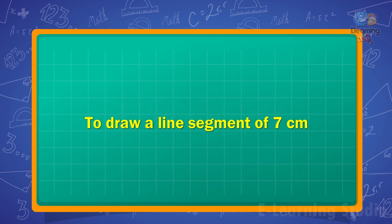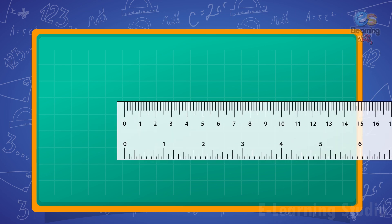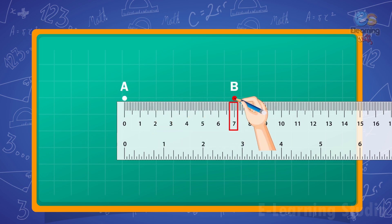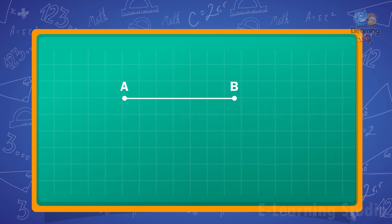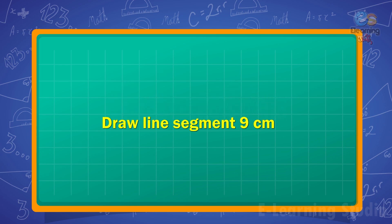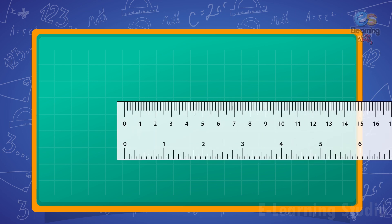Next, how to draw a line segment. To draw a line segment of 7 centimeters, we put the ruler and mark a point A against the zero mark, and a point B on the 7 centimeter mark. We then draw a line with a sharp pencil along the edge of the ruler to join these two points. We thus obtain line segment AB with a length of 7 centimeters.